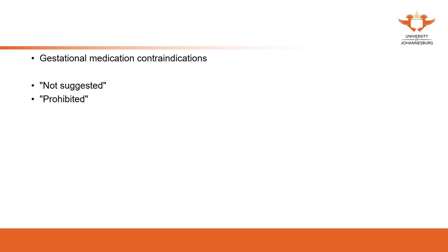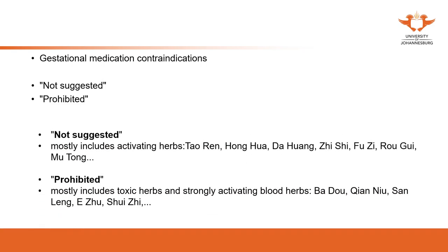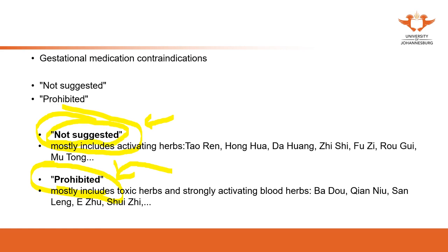The second contraindication is gestational — during this period, no matter whether it's herbal medicine or acupuncture, special attention needs to be paid to the patient. Certain herbs or certain acupuncture points are not suggested or are prohibited. Some things being 'not suggested' means you try not to use them; something 'prohibited' means you are not allowed to use it. When we study acupuncture points and the meridians, we will know which points are prohibited or not suggested in this situation.